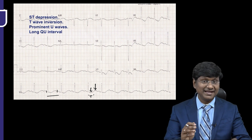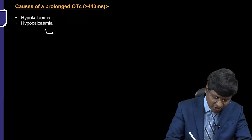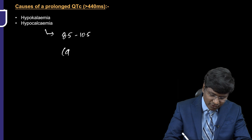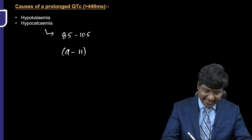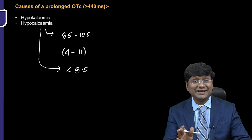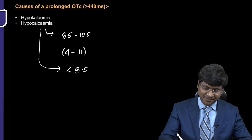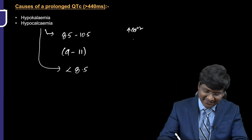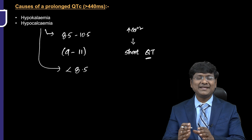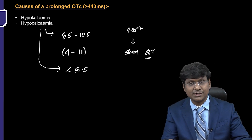Now, the other electrolyte abnormality causing QT prolongation is hypocalcemia. Normal calcium levels are around 8.5 to 10.5 mg/dL, or 9 to 11 mg/dL in some references. When calcium falls below 8.5 mg/dL, QT prolongation begins. In hypercalcemia, you will have a short QT interval, while in hypocalcemia, you will have a long QT interval.